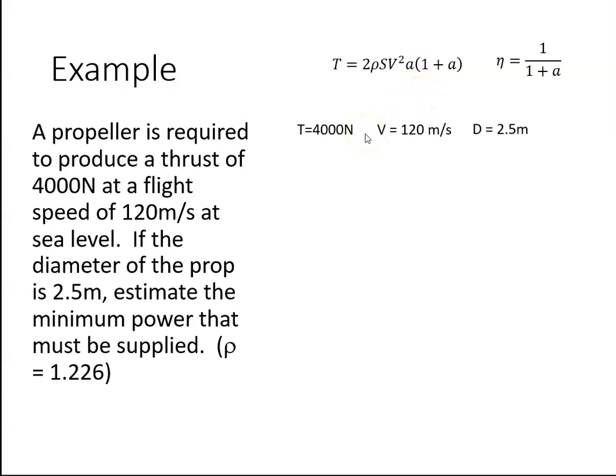Let's see what we're given. We're told the thrust is 4000 newtons and we're given speed as 120 meters per second. And we're given the diameter of the prop. So we are given rho.